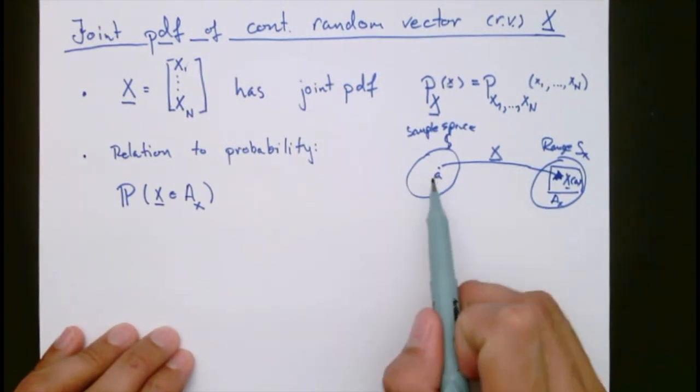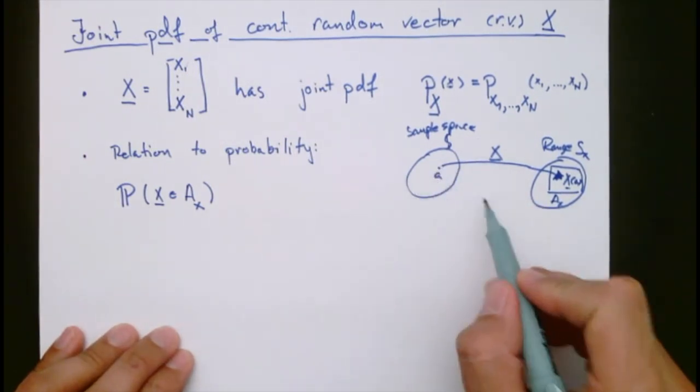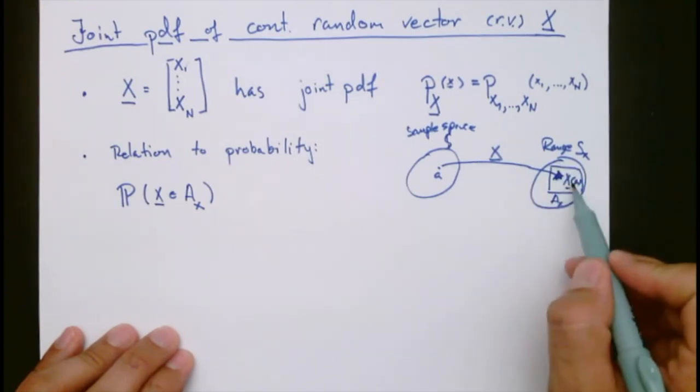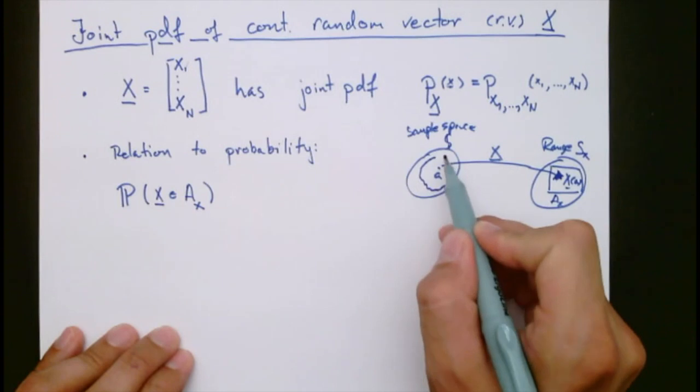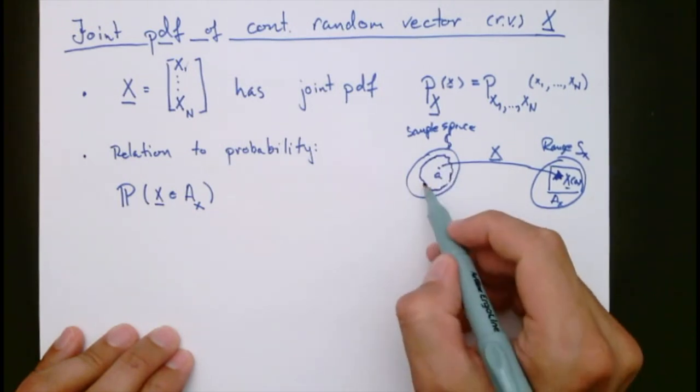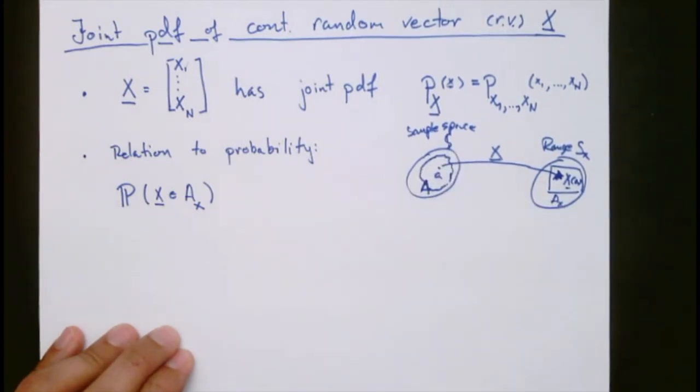We are interested in understanding what is the probability corresponding to x landing up here. So that means what is the corresponding probability of the corresponding event A over here in the sample space.